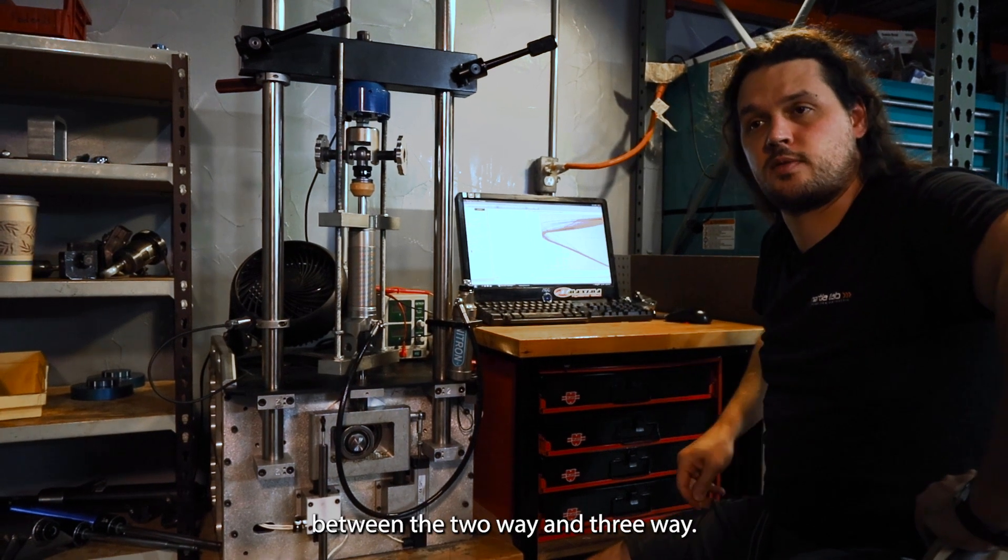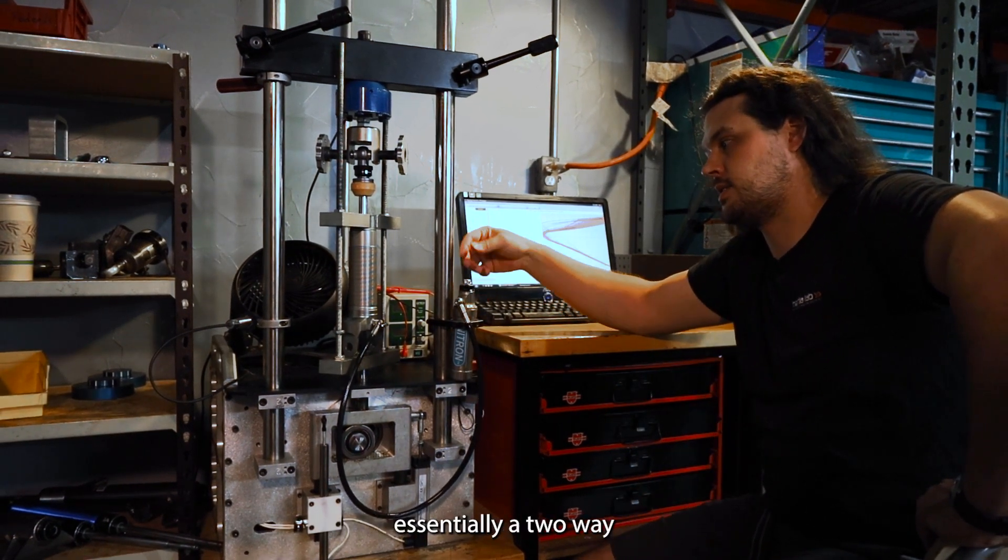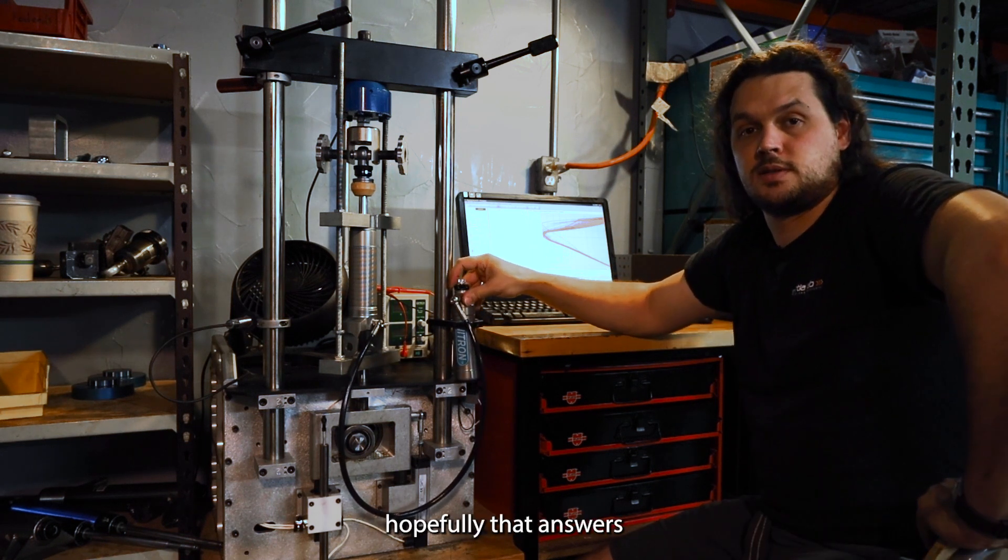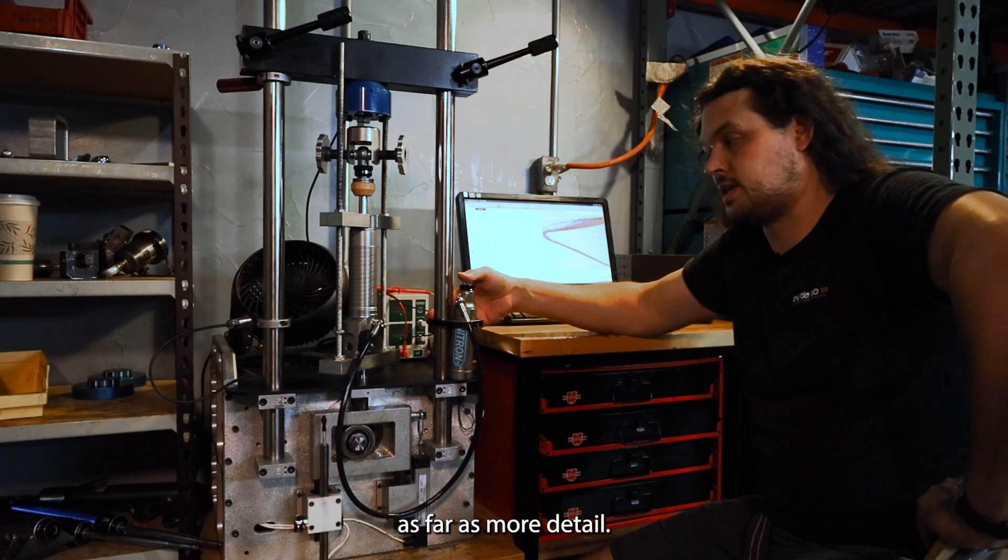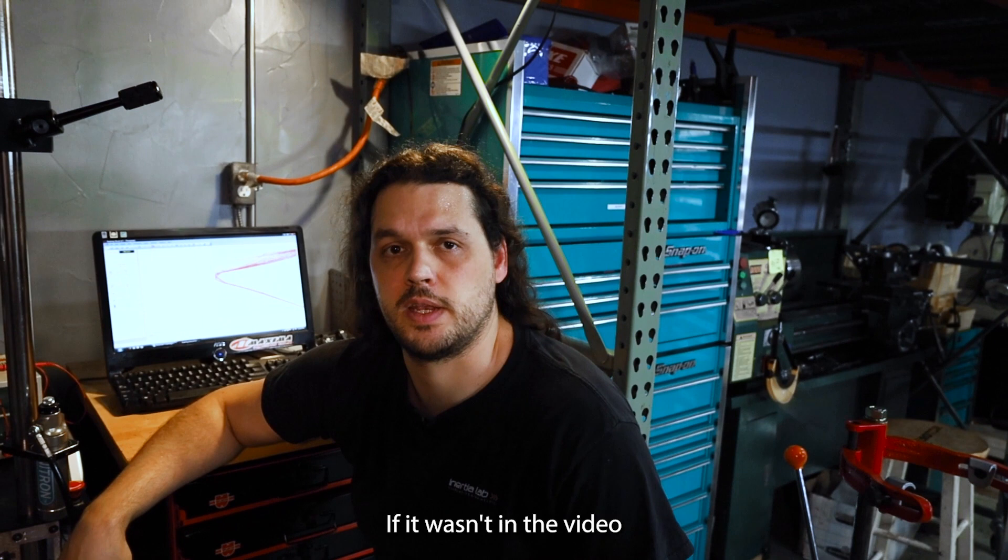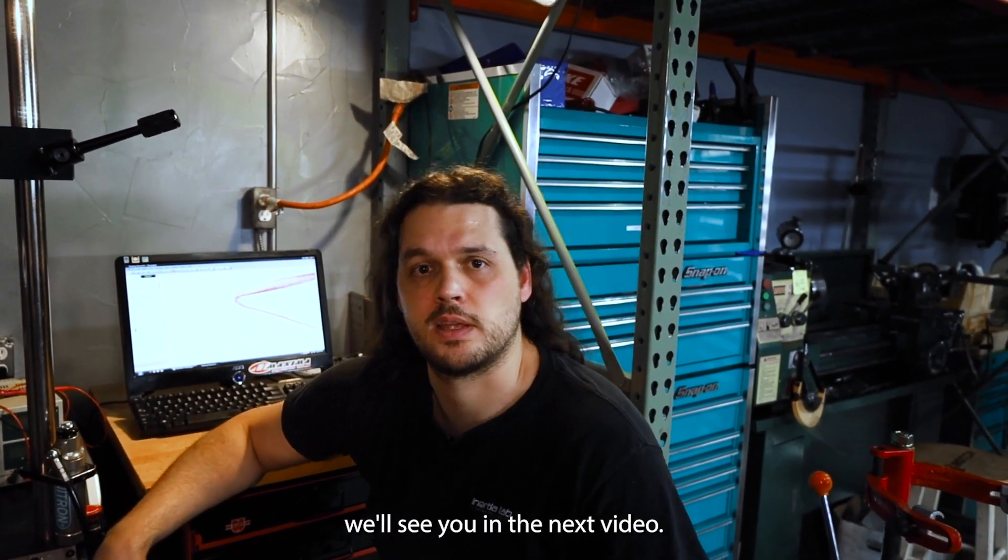So this is just a basic example of some differences between the two-way and three-way. They are very similar, obviously the three-way is essentially a two-way plus an extra mode of control. Hopefully that answers some of your questions as far as more detail. So if you have any more questions or anything like that just reach out to us if it wasn't in the video, or if you have anything particular to your car and we'll try and get you taken care of. We'll see you in the next video.